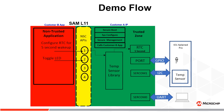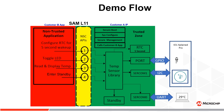It toggles the LED through API 2, reads and displays temperature using API 3, and finally requests the system to enter standby sleep mode. This temperature reading repeats every 5 seconds. Any illegitimate requests for resources by Customer B other than the APIs provided by Customer A will be denied access. This enables Customer A to protect his IP while providing value to Customer B.